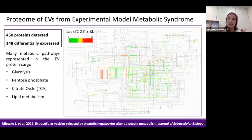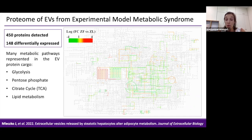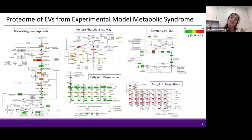Our next step was to analyze the whole proteome of these hepatocyte-derived extracellular vesicles. We detected 450 proteins, of which 148 were differentially expressed. We were able to detect many different pathways altered in the vesicle proteome, such as glycolysis, pentose phosphate pathway, citrate cycle, and lipid metabolism. The figure shows all the pathways altered in the metabolism, and in the following slide I wanted to show in more detail the proteins found altered in each pathway — there are more than two proteins per pathway, with more changes inside each one.